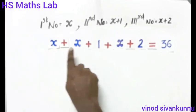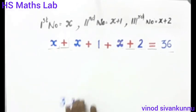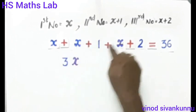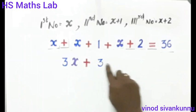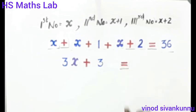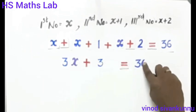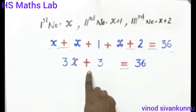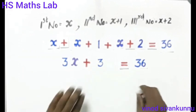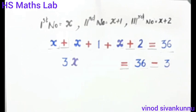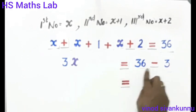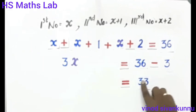Simplifying: x plus x plus x gives us 3x, and 1 plus 2 gives us 3, so 3x plus 3 equals 36. Subtracting 3 from the right side: 3x equals 36 minus 3, which is 33.